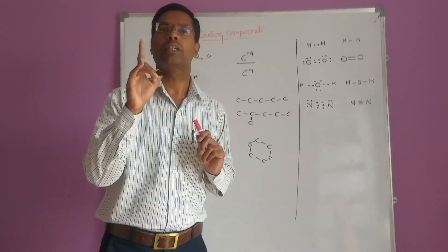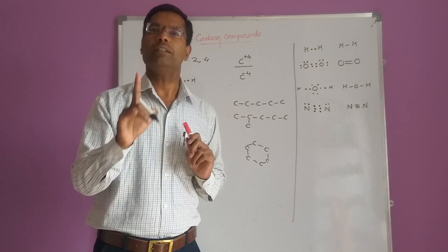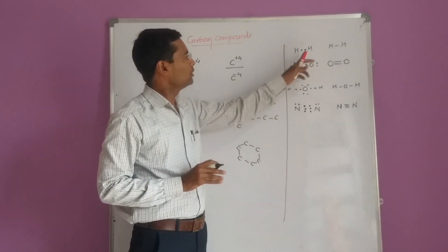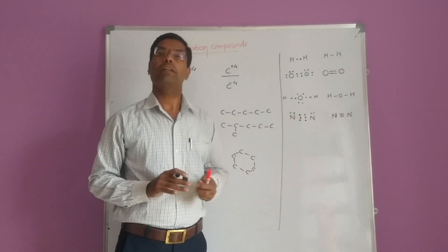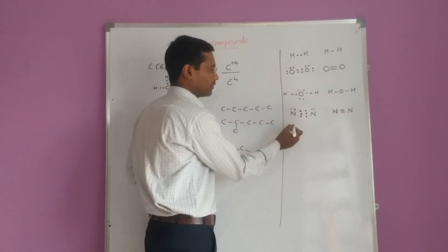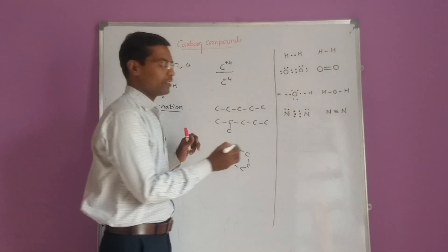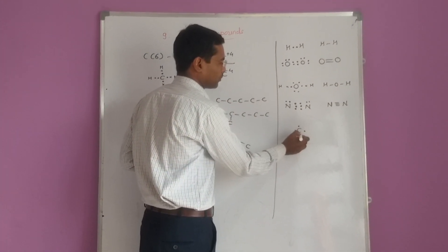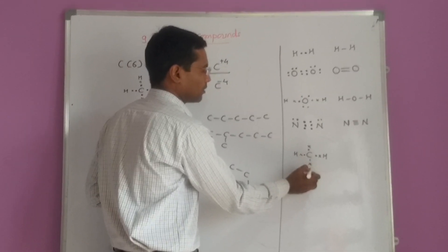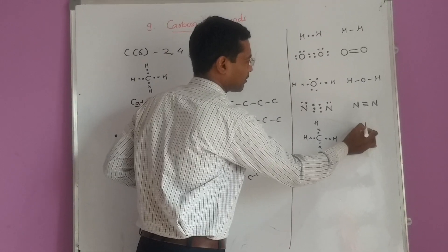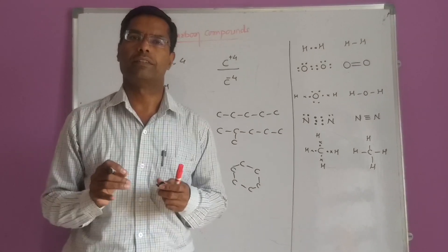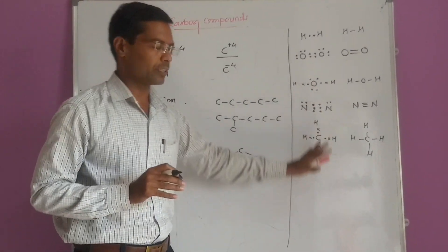Covalent compounds contain covalent bonds, and there are three types: single bond, double bond, and triple covalent bond. Methane is an example - it can be shown using dot-and-cross structures, also called Lewis structures. These Lewis structures are used to represent covalent molecules, and in this way covalent molecules are formed.